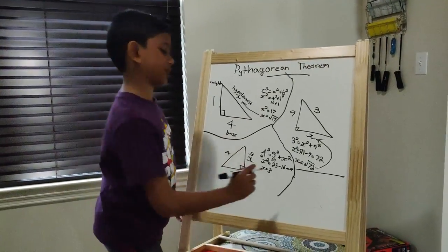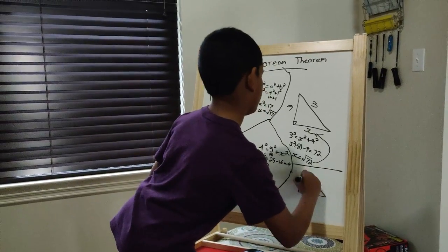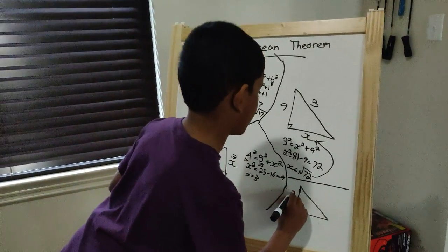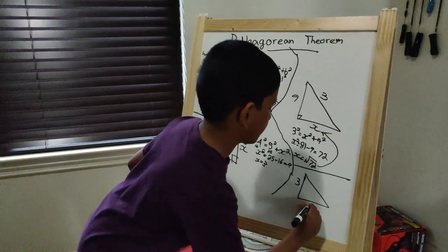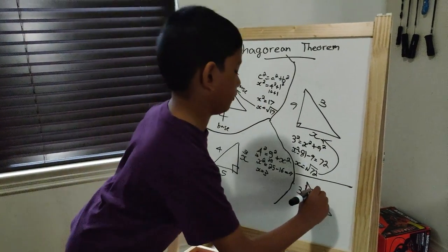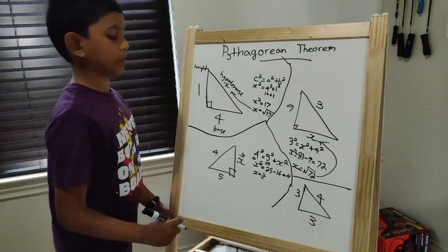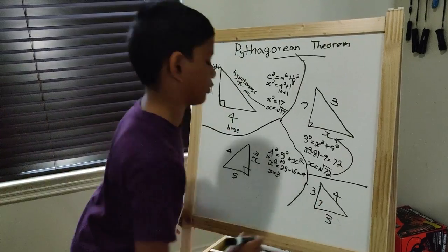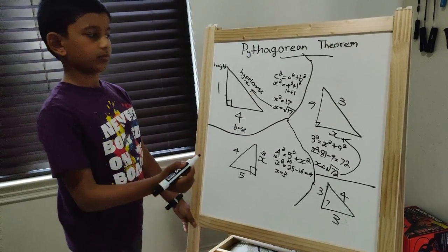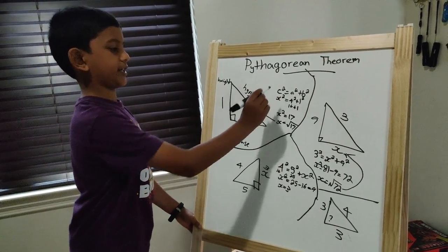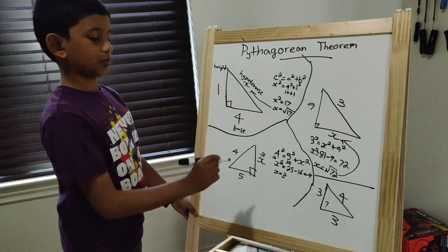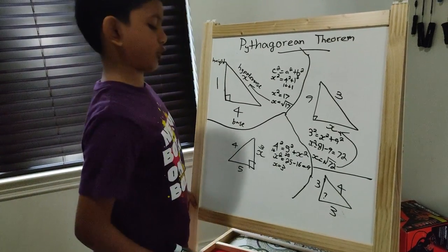This might confuse you because they will give you a triangle where you know the height, you know the base, and you know the hypotenuse. But they will not give you the angle. So what do you do? Same thing. It's simple: c² = a² + b². This helps you find out if it's a right triangle or not.